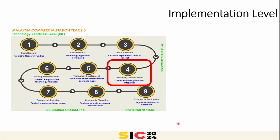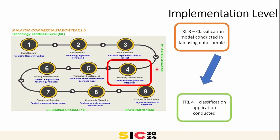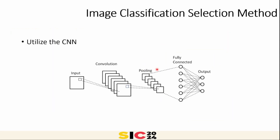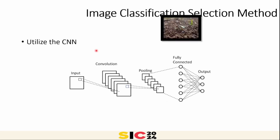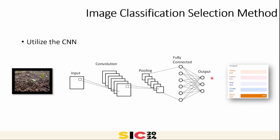Our technology is at Technology Readiness Level 4 based on the TRL suggested by MOSTI. We completed TRL 3 for the classification model in the lab, then jumped to TRL 4 where we successfully performed the specification of soil types. We utilize CNN — Convolutional Neural Networks — trained towards five categories of classes, returning five outputs for any image input.